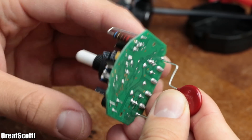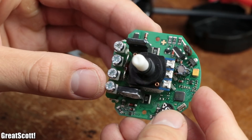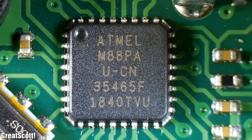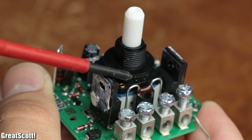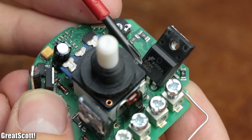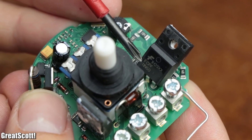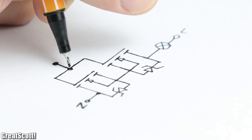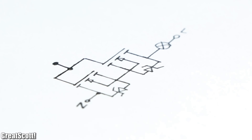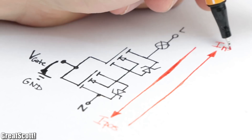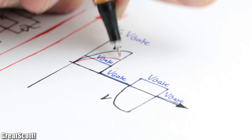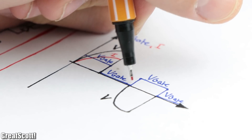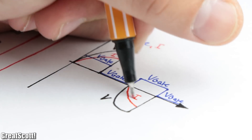To find that out I opened up the commercial trailing edge dimmer and found a pretty complex circuit built around a microcontroller. The two main power switches are this time FCPF11N60 MOSFETs, which are connected in series to the power line and load as shown here. When a voltage is applied to their gates the current can flow through them, and as soon as there is no control voltage applied the current flow is interrupted, which makes trailing edge control possible.